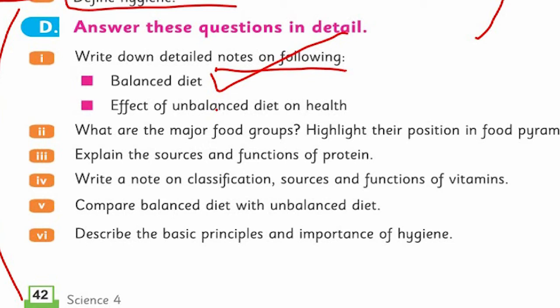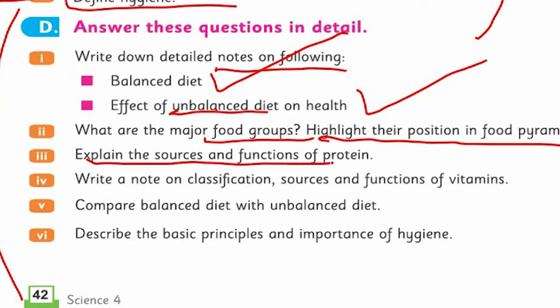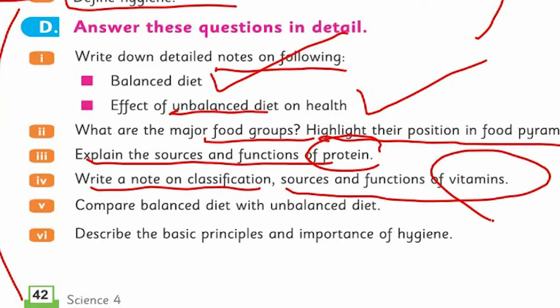Here you need to write short, and here you need to write long. Effects of unbalanced diet and unhealthy - you must write this. What are the major food groups? Highlight their position in the pyramid. Take the pyramid and show its importance. Then define and explain the sources and function of protein. Write notes on classification, sources and function of vitamins.